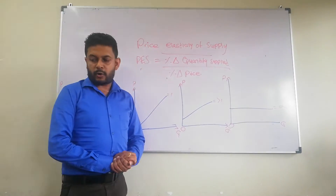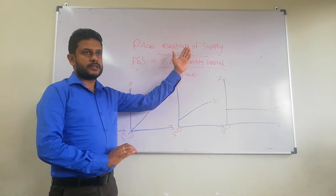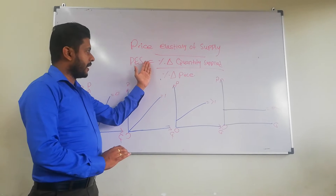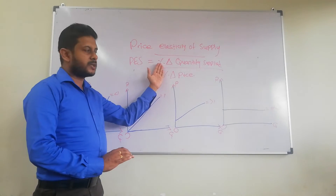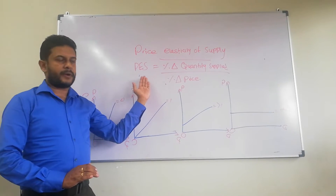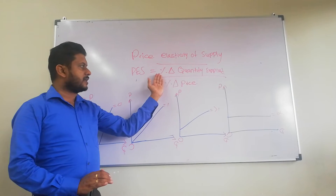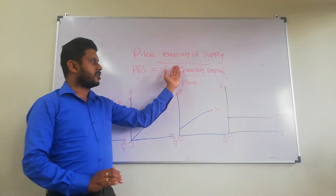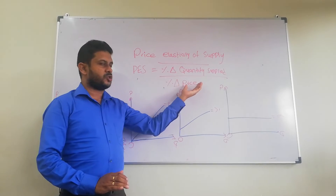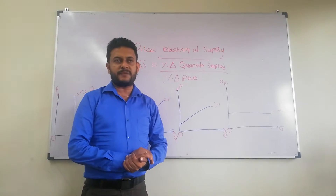Today, we are going to explain about price elasticity of supply. Price elasticity of supply is the responsiveness of quantity supplied to a change in price. It can be calculated as percentage change in quantity supplied divided by percentage change in price. This is the equation to calculate price elasticity of supply.